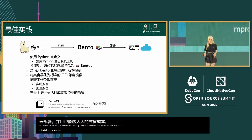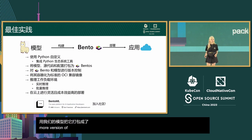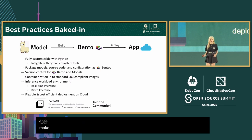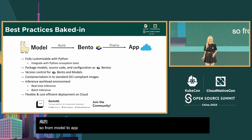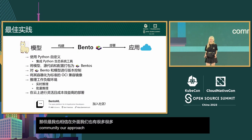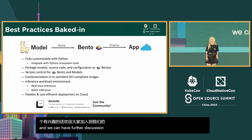Now our journey has reached its destination. We start with BentoML to build and pack models into Bentos, manage the version of your Bento and models, containerize your Bento into an OCI image, and use serverless to ensure your deployment is not only scalable but also cost-efficient. From model to app is not easy — today I just wanted to share our approach to doing this. There are tons of other ways out there in the community, and ours is just one of them. If you're interested, please join our community for further discussion. That's all my slides today, thank you everyone for listening.